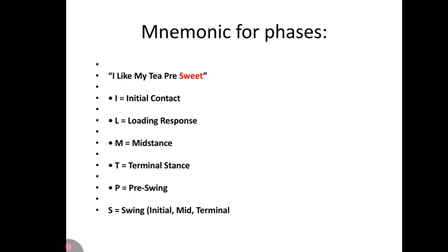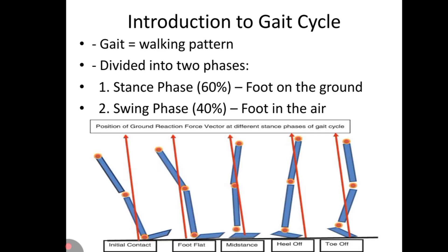For the phases of the gait cycle, here is the mnemonic: 'I Like My T Pre Suite.' I for initial contact, L of Like for loading response, M of My for mid stance, T for terminal stance, P of Pre for pre-swing, S of Suite for swing — initial, mid, and terminal.